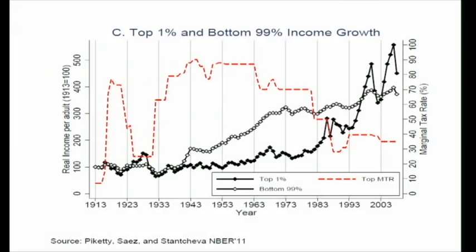Let me come back to the United States to finish the time series, which shows incomes for the top 1% in black — how much they have grown on an index starting at 100 in 1913. In empty diamonds, the bottom 99%. And in red, the top tax rate on that same scale.